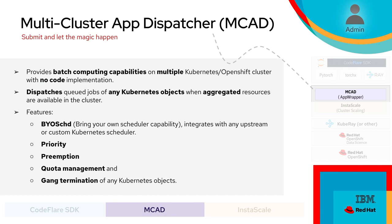Typically, AI workloads use frameworks such as Spark, Ray, PyTorch, or TensorFlow. MCAD can wrap any of these objects inside an AppWrapper with zero code changes. Multi-Cluster App Dispatcher dispatches any Kubernetes objects only when aggregated resources are available in the cluster, providing guarantees for AI workload execution. Think of a car — it can only drive from point A to point B when all four tires are working. Similarly, AI workloads can only make progress when all required resources are available. Since we provide guarantees on execution, we do not create pending pods and avoid control plane scalability issues.